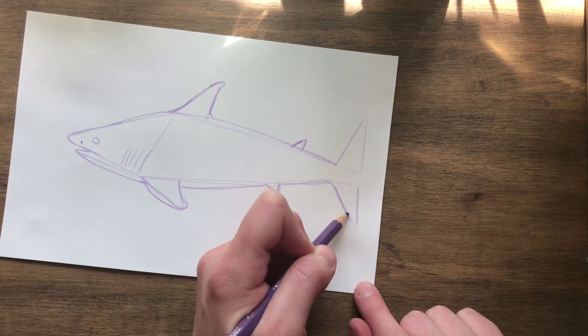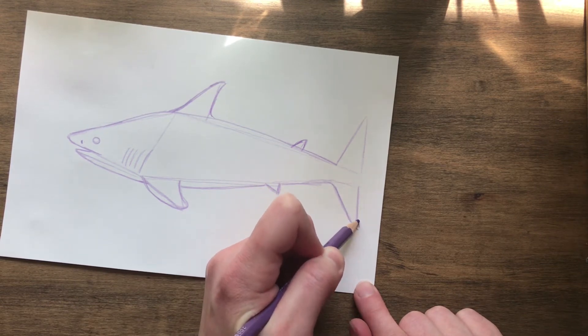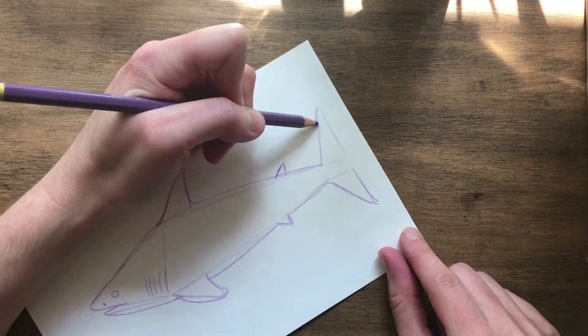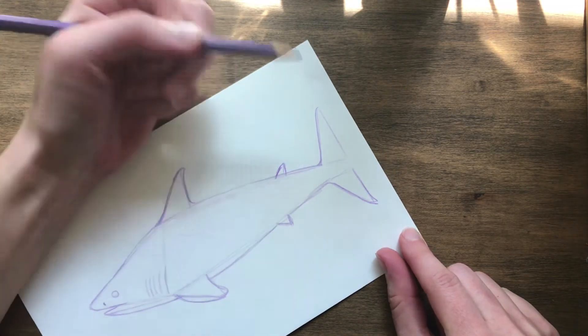These ones we are going to smooth them out too. And kind of curve the tips of the triangles. Like we did on that top fin.